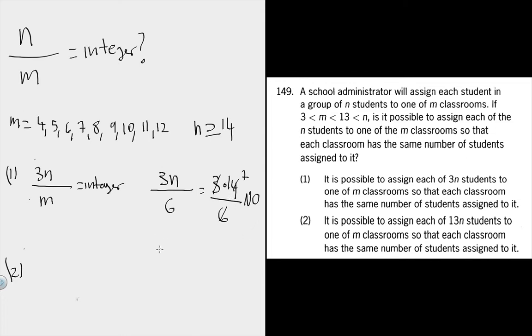But of course, we could also have a yes for our question. We could use the same m value of 6, just make n something that's divisible by 6. For instance, 18 will work. 3 times 18 over 6 is an integer, but also 18 over 6 is an integer. So this gives us a yes. We have both a no and a yes, so statement 1 is insufficient.